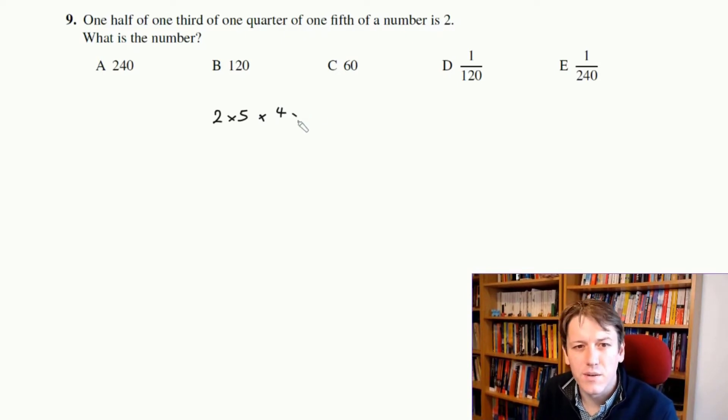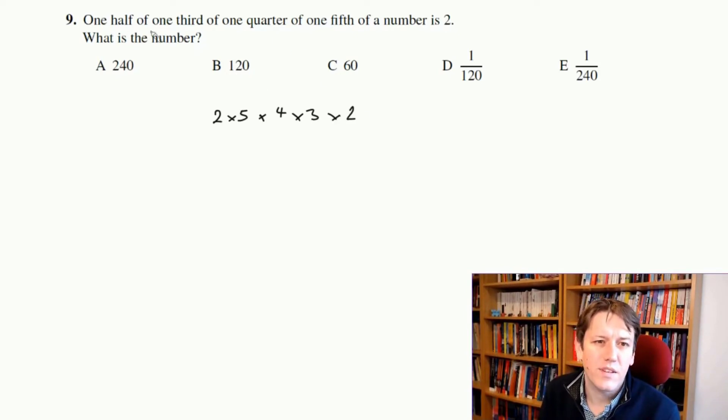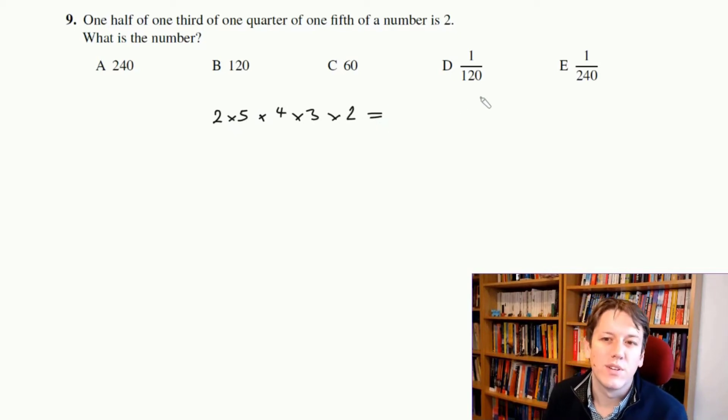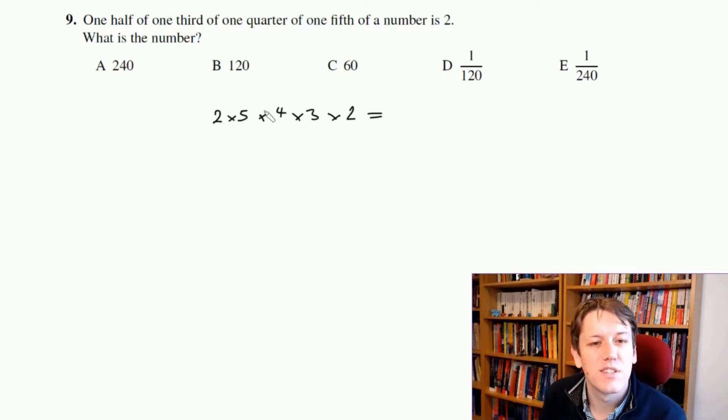And then it's a third of that, so it's times 3. And a half of that is times 2. So if I take one half of this number, it would undo the multiplying by 2. A third of it undoing the multiplying by 3. A quarter would be undoing this multiplication. A fifth would be undoing this, and then I'd get 2. So this is the number that we want, and then we've just got to work it out. You can see then it's one of the bigger numbers, not the fractions. So I've got 10 times 4 is 40, times 3 is 120, times another 2 gives us 240, and the answer is A, 240.